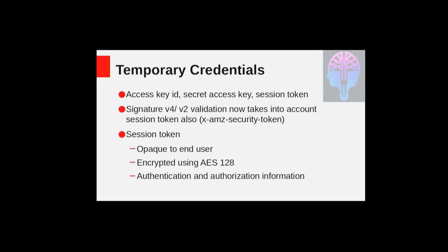What are temporary credentials? Permanent credentials to access S3 resources are a pair of access key ID and secret access key. Temporary credentials, in addition to these two parameters, also include something known as a session token. Whenever any STS API is invoked in RGW, it returns temporary credentials back to the end user including the access key ID, the secret key, and also a session token. The session token is encrypted and therefore opaque to the end user, but it contains a lot of useful information for RGW.